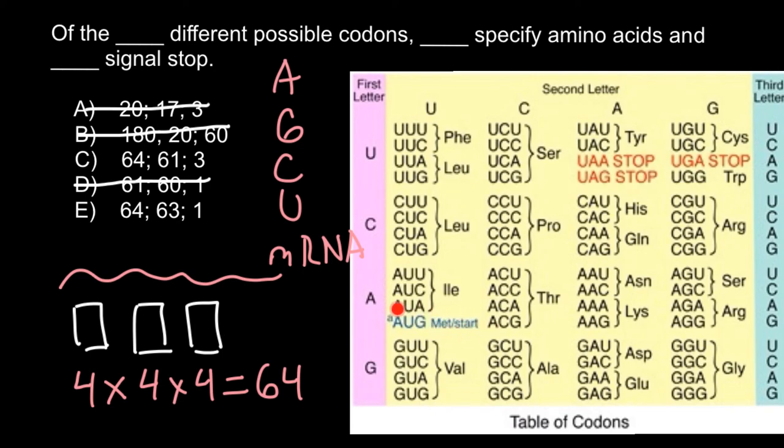So only three codons don't code for any amino acids. 64 minus 3 gives us 61 codons that code for amino acids.